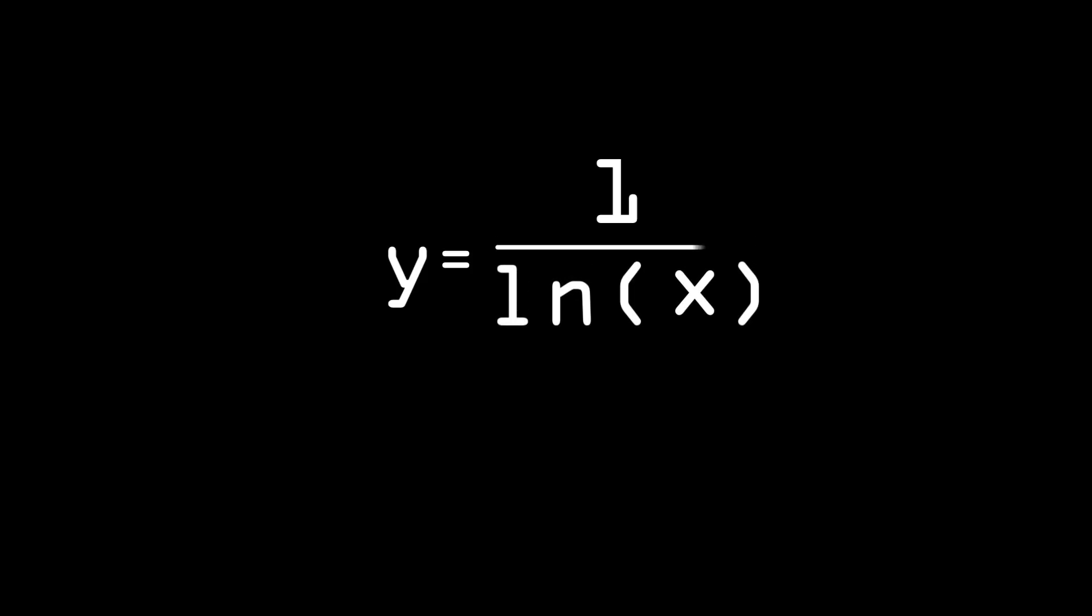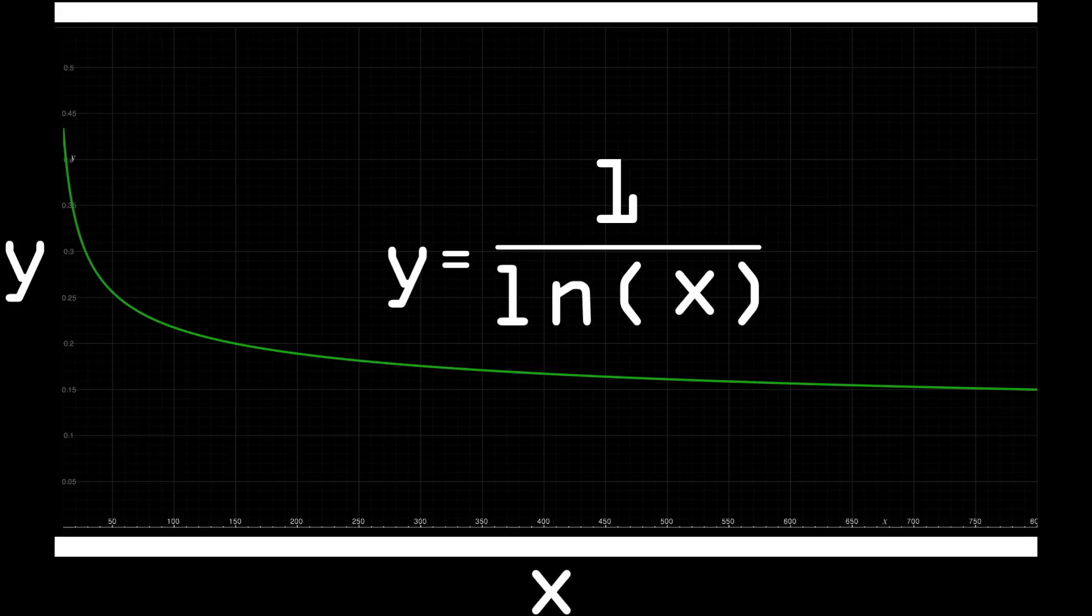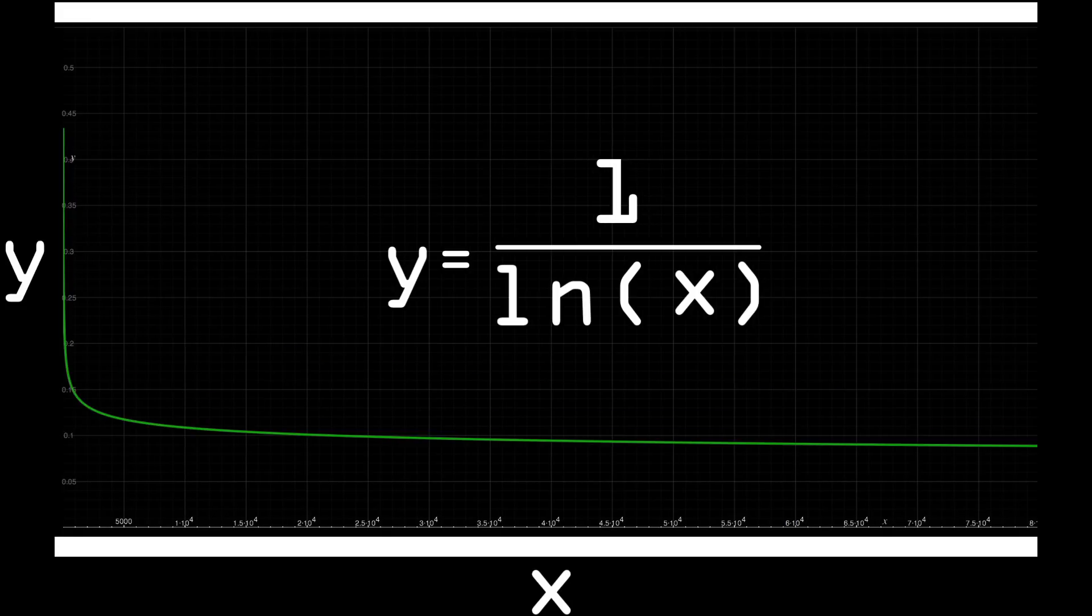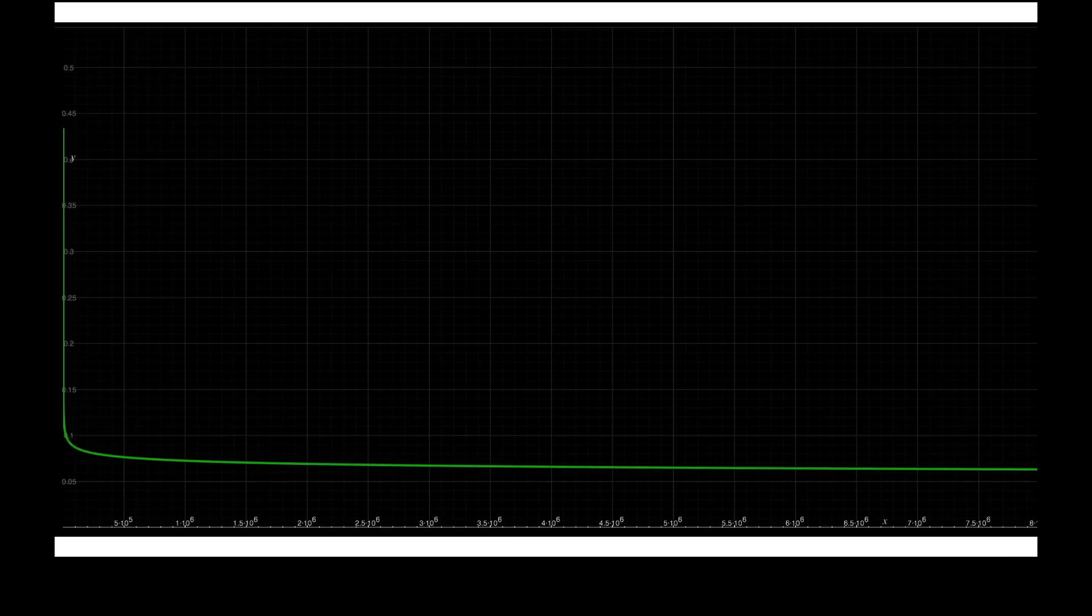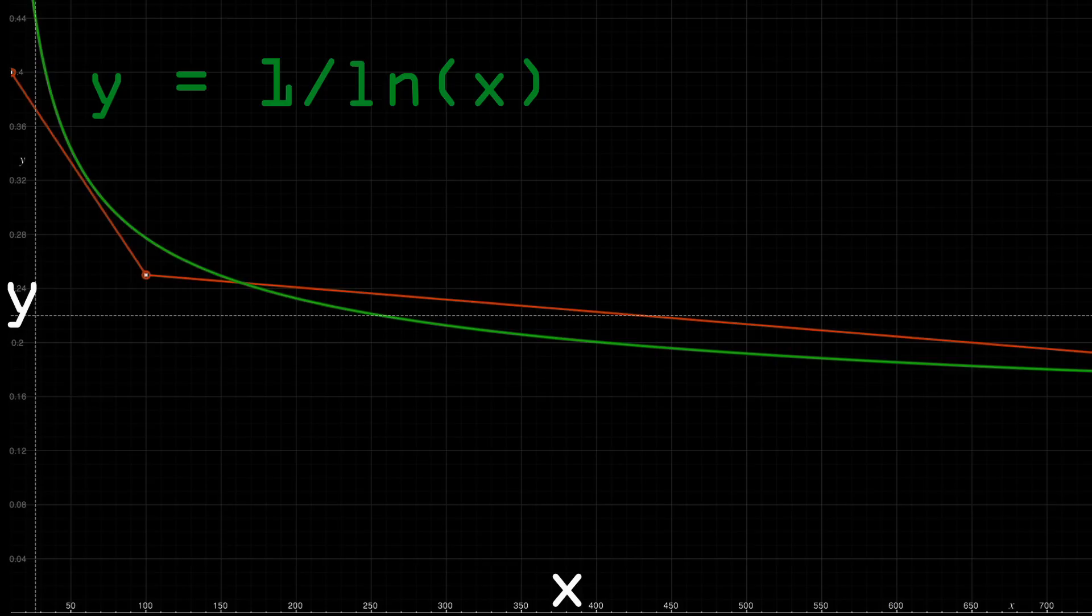The final step is to invert this by changing the y-axis to 1 divided by the natural logarithm of x. And when we zoom out we find the exact same curve generated when we plot the density of primes. Let's confirm this by overlapping the two plots. In green is a graph of the line y equals 1 over the natural logarithm of x.